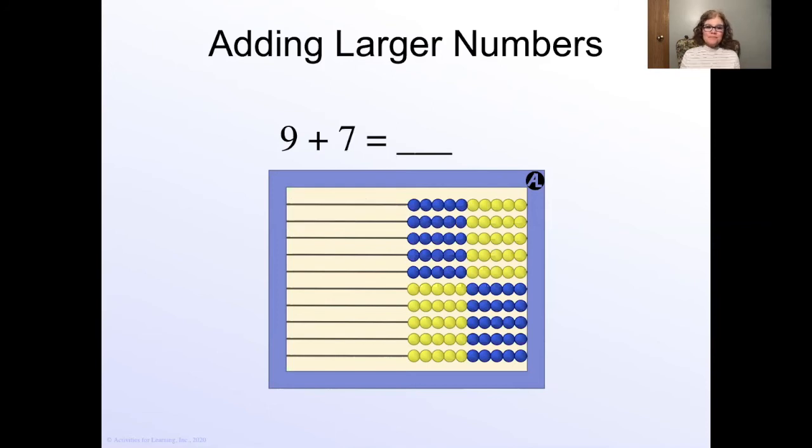See how powerful subitizing is? Let's try one more. 9 + 7. Look at the yellow beads first. How many are there? Six and ten is sixteen. Isn't that crazy? Doesn't it blow your mind? Fabulous. Your child is going to accurately and quickly get to those math fact answers so much better when they are using subitizing.